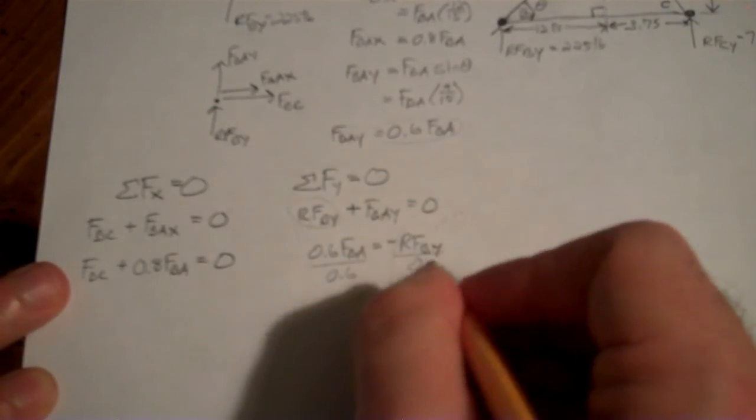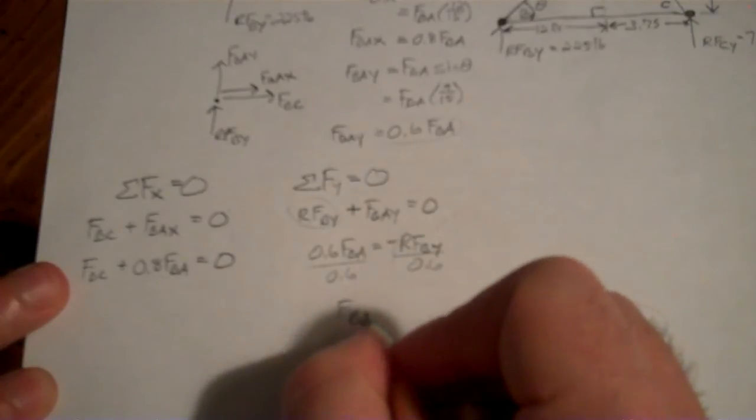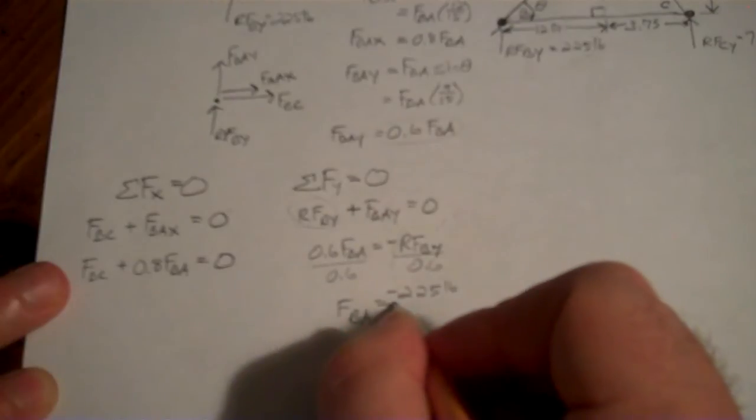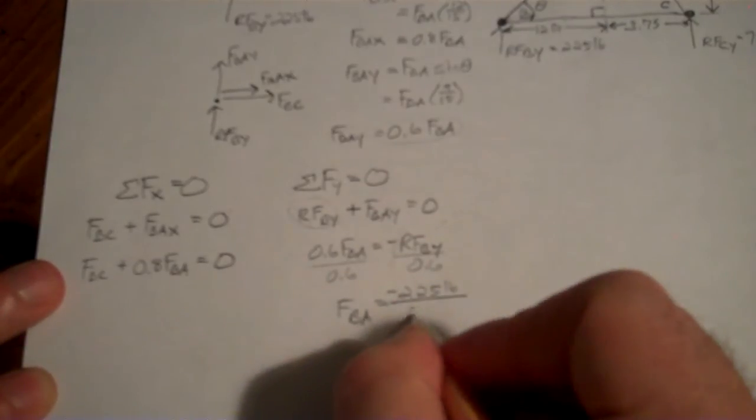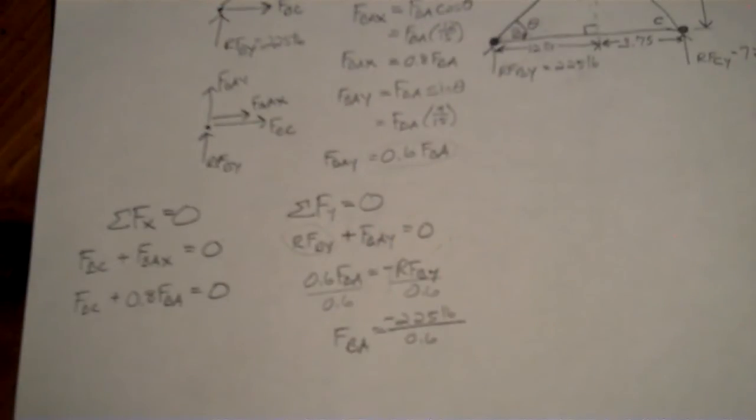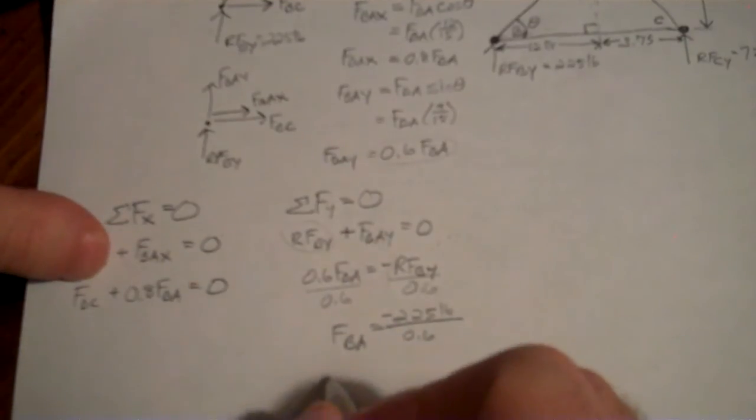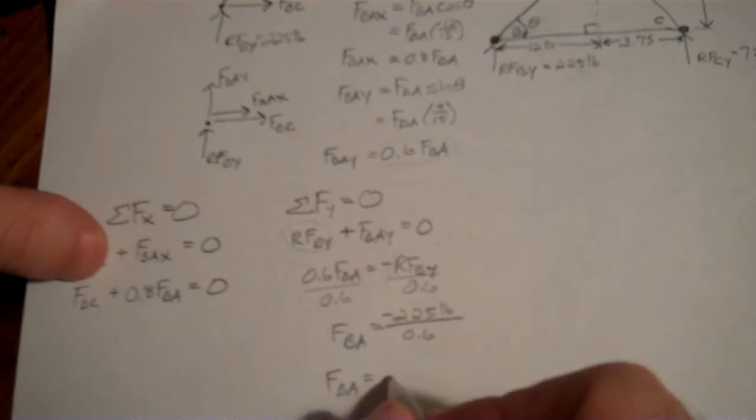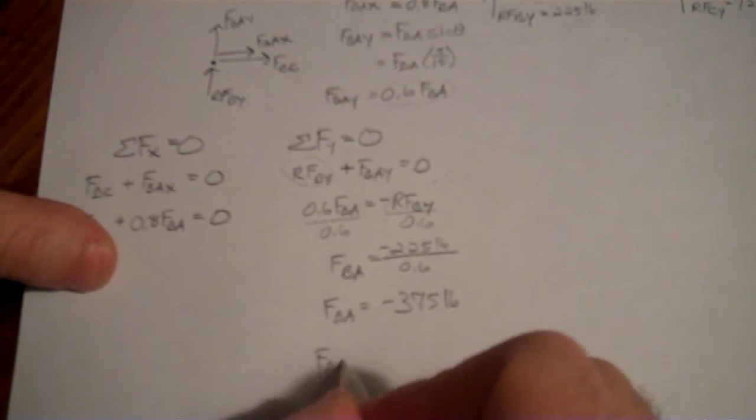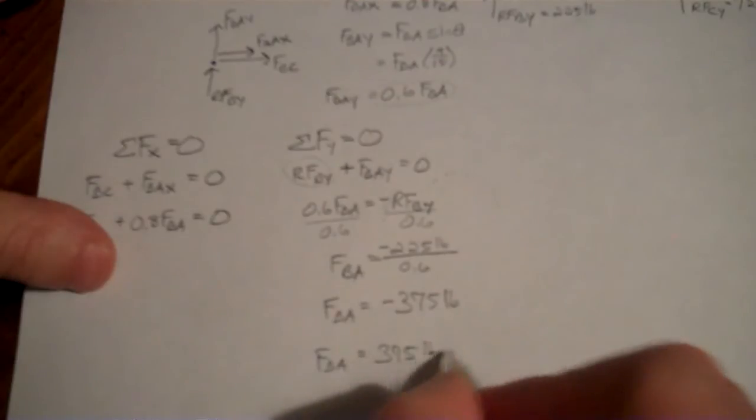So divide by 0.6, divide by 0.6, my FBA has to be equal to negative RFBY. RFBY was 225 pounds. That was one of our reaction forces we found on the flip side when we were doing the reaction forces. Divide by 0.6, so RFBY—if I can grab my calculator, of course I close it on my computer each time knowing I'm going to need it again, but here we go—225 divided by 0.6 gives us 375. And don't forget that negative sign in there. So I have negative 375 pounds is FBA, or FBA is 375 pounds of compression.